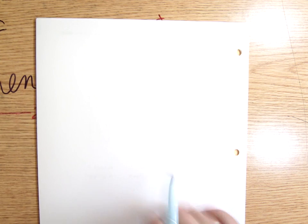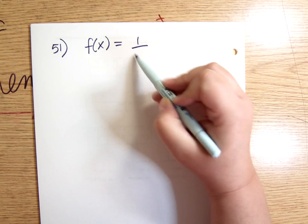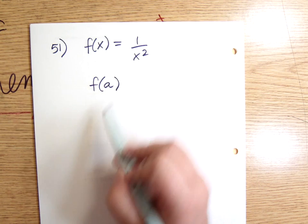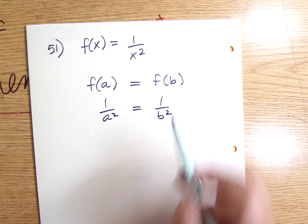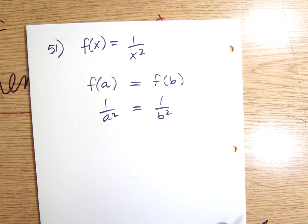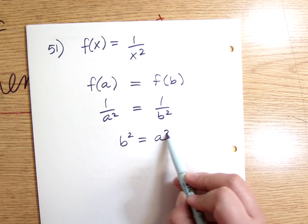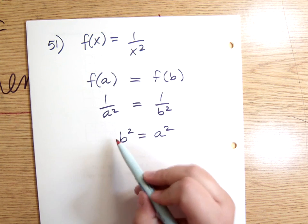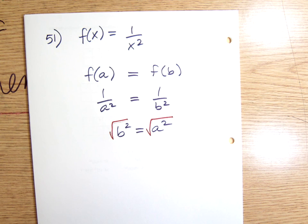Let's look at number 51. f(x) equals 1/x^2. So f(a) being equal to f(b) implies that 1/a^2 equals 1/b^2. I'm going to solve that proportion the way I like to solve proportions, which is cross-multiplying. So 1 times b^2 equals 1 times a^2. Now when I take the square root of both sides, anytime you take the square root of both sides you have to do a plus or minus.